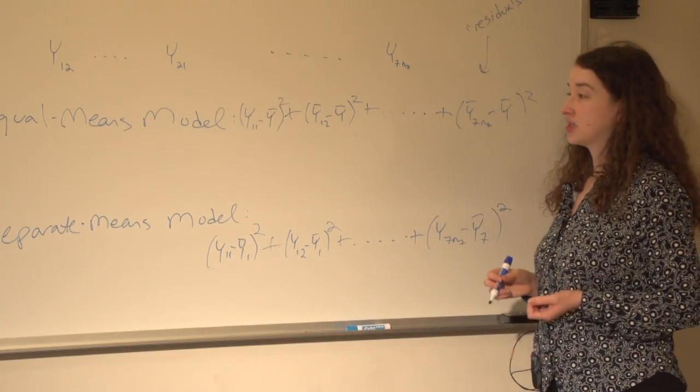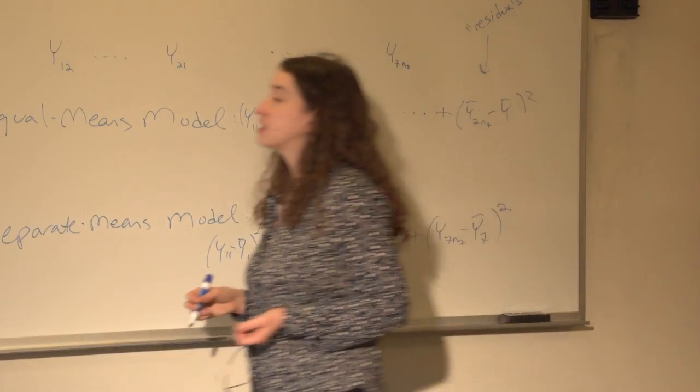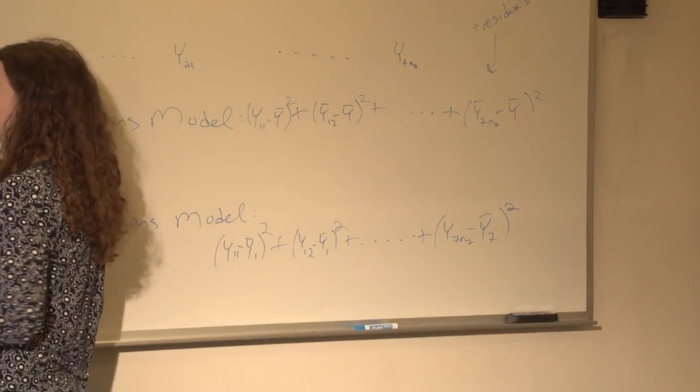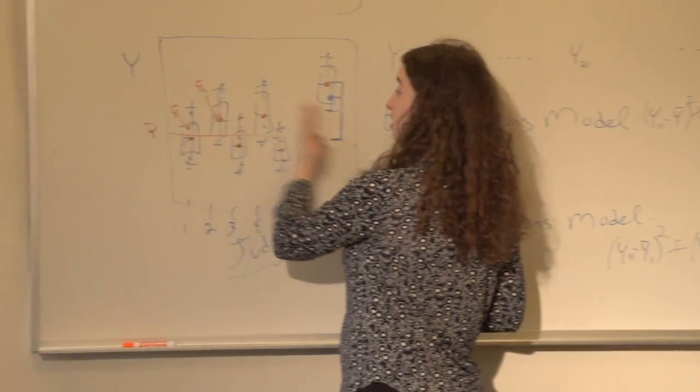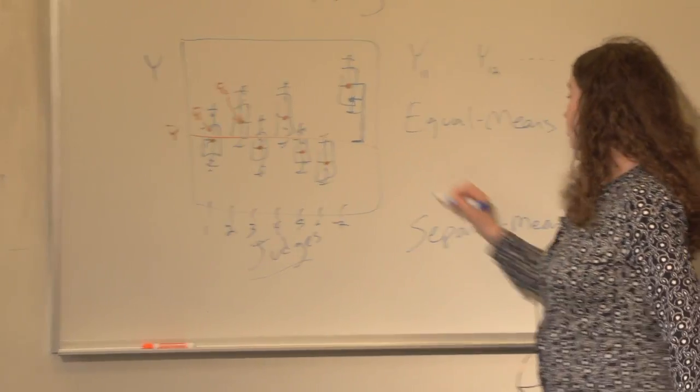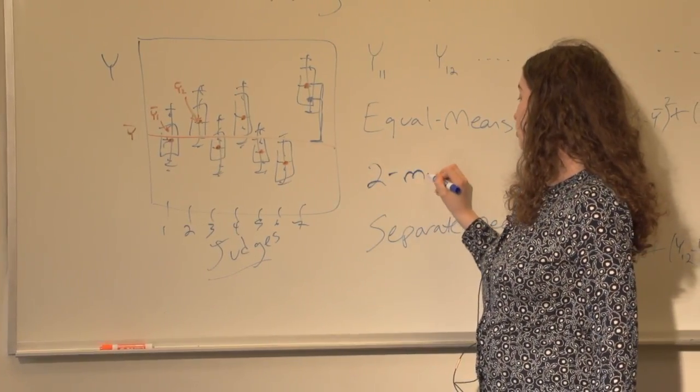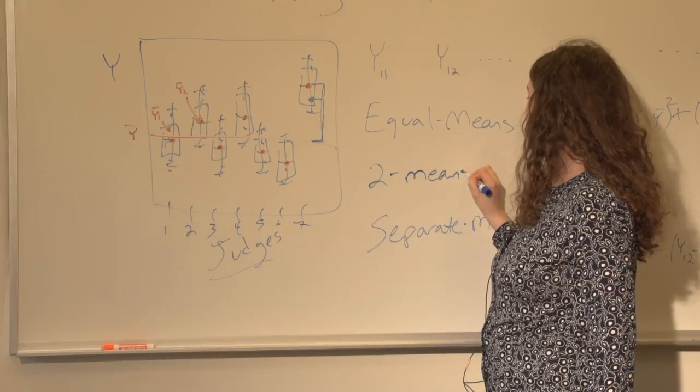These are not the only two models we could have specified. In this example, it turns out what we're interested in is how this first judge compares to the rest. And so we could have, maybe we could call it a two-means model.